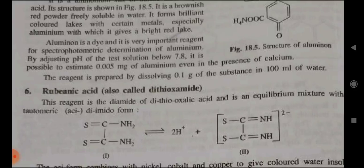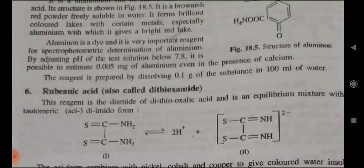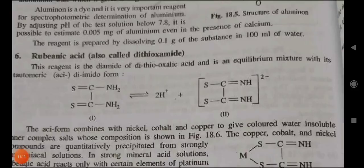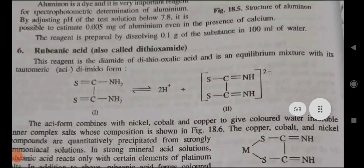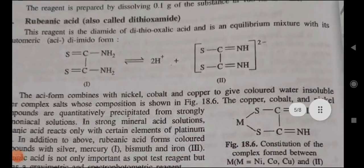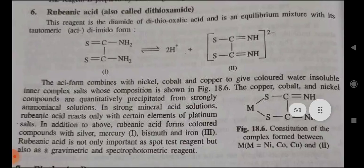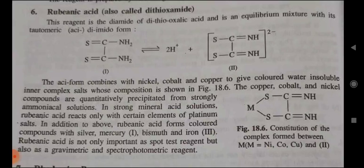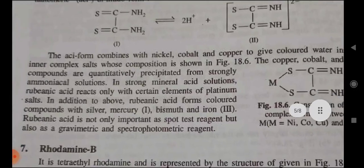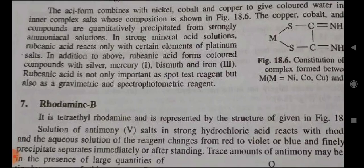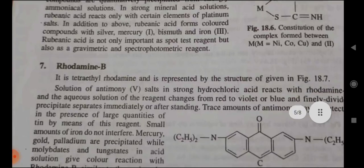Sixth — Rubeanic acid (also called dithiooxamide): this reagent is the diamine of dithiooxamic acid and exists as an equilibrium mixture with its tautomeric diimido form. The enol form combines with nickel, cobalt, and copper to give colored, water-insoluble inner complex salts, as shown in figure 18.6. The copper, cobalt, and nickel compounds are quantitatively precipitated from strongly ammoniacal solution. In strong mineral acid solution, rubeanic acid reacts only with certain elements of the platinum group. In addition, rubeanic acid forms colored compounds with silver, mercury, bismuth, and iron. Rubeanic acid is not only a spot test reagent but also a gravimetric and photometric reagent.